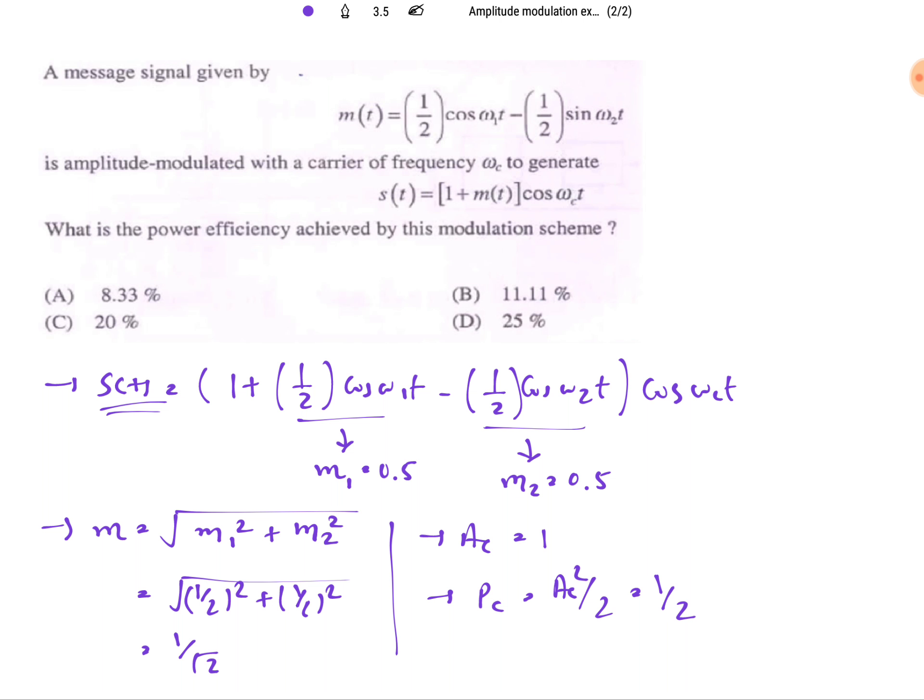Now we need to calculate sideband power. Sideband power is μ square by 2 into Pc where μ is modulating index, so that is 1 by root 2. If I place that, it's half into half into half into carrier power that is half, so this is 1 by 8.